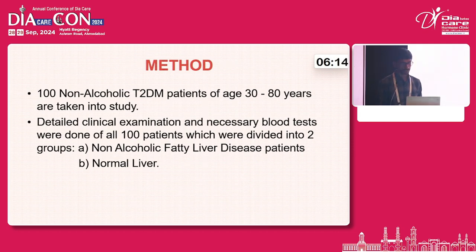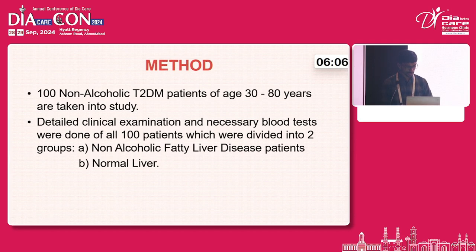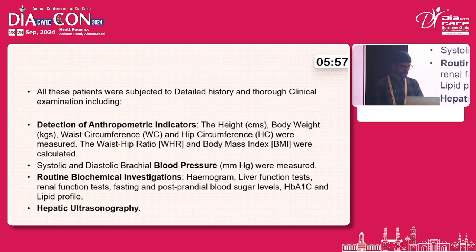The method involves 100 diabetes mellitus patients of age 30 to 80 years taken into the study. Detailed clinical examination and necessary blood tests were done for all 100 patients, who were divided into 2 groups: the non-alcoholic fatty liver disease group and the normal liver group.